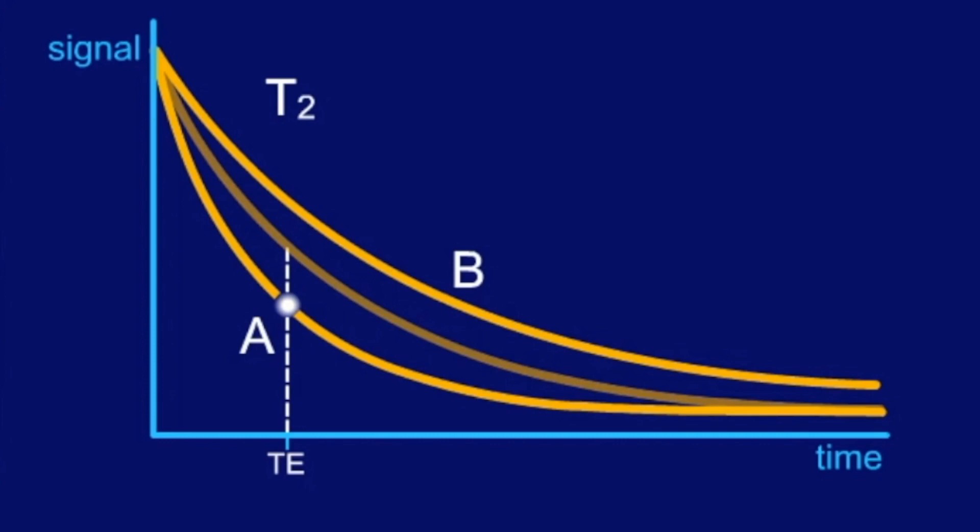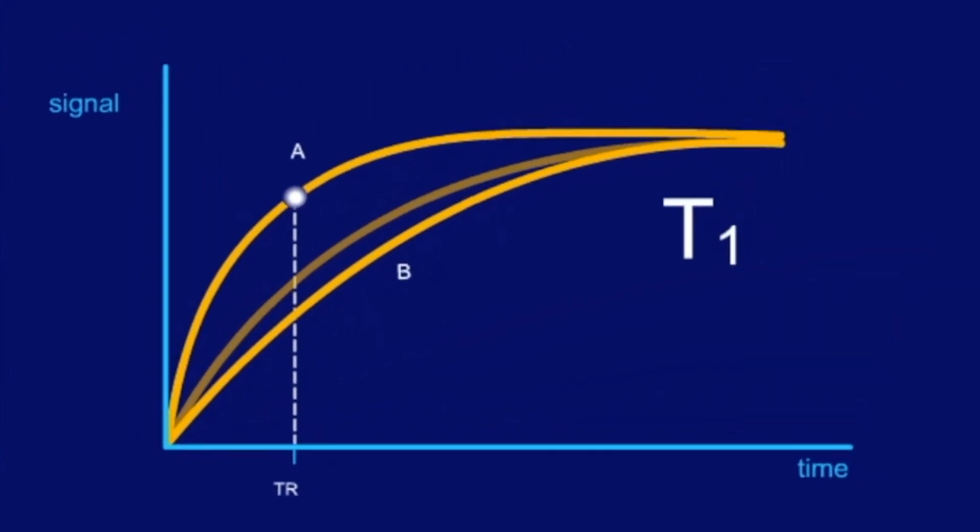Loss of signal is often more difficult to appreciate than a signal enhancement, as we have just seen. This is why T1 weighted images are the predominant imaging technique used after contrast medium injection.